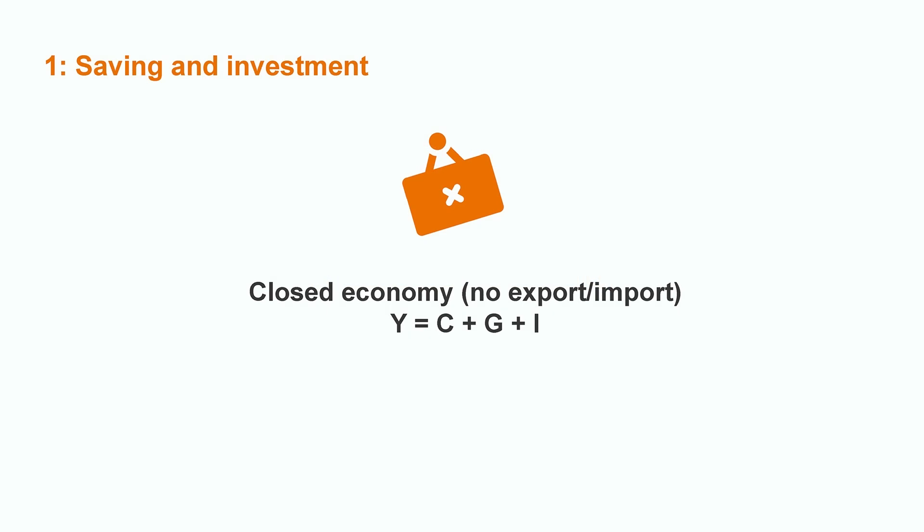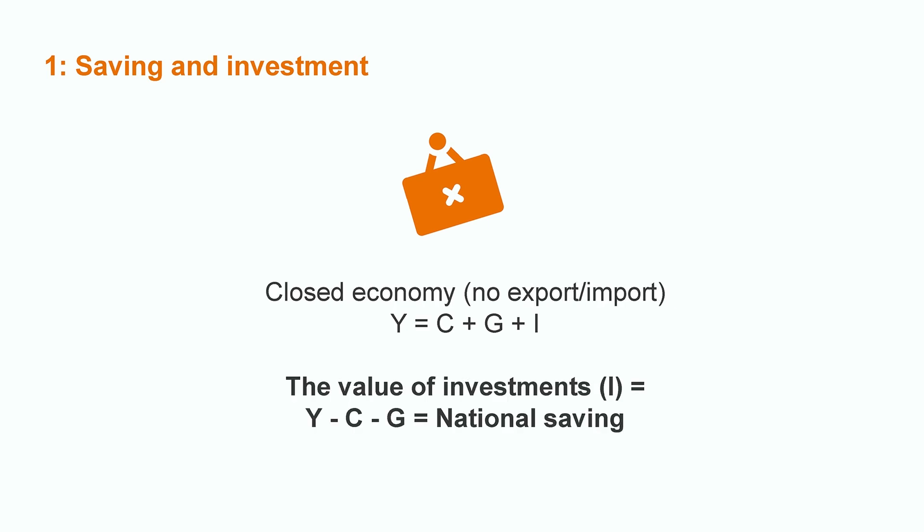Now we can turn to investment. In the classical model, which is a simplified version of reality, all savings turn into investment when they go through the financial system. For simplicity, let's assume that we are in a country with no exports or imports. Then national income Y is a sum of consumption C, government spending G, and investment I. The value of investment is exactly equal to national saving.